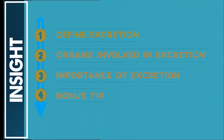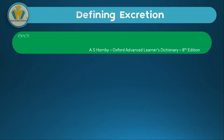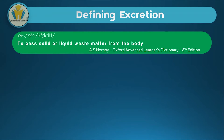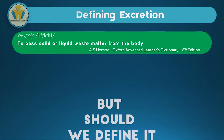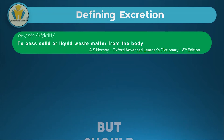We're going to start with defining excretion. The word excretion comes from the word excrete, and I went to the dictionary and looked for the definition of excrete — it said to pass solid or liquid waste matter from the body. From that I could form a definition: excretion is the process by which solid or liquid waste matter is passed from the body. But the problem with that definition is that it doesn't have biological terms in it.